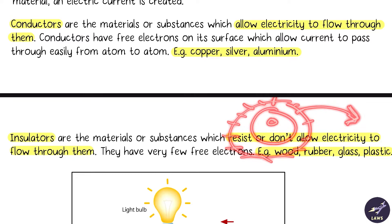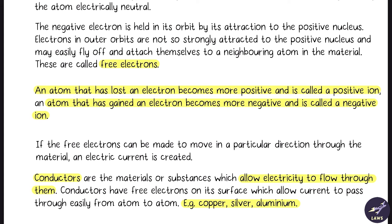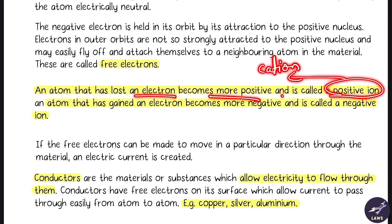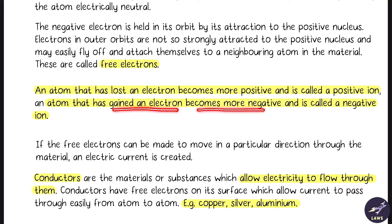An atom that has lost an electron becomes more positive and is called a positive ion or cation. An atom that has gained an electron becomes more negative and is called a negative ion or anion.